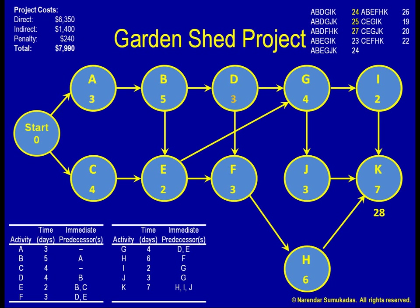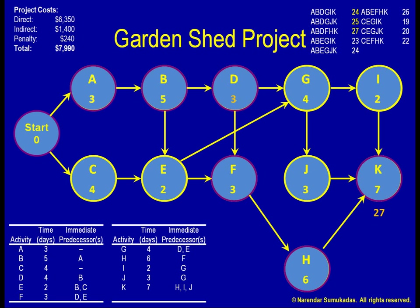Bringing D down to three days brings my project duration down to 27 days. The critical path is still A, B, D, F, H, K. My direct costs have gone up by $25 due to crashing D. Indirect costs have gone down by $50 since there is one day less of overhead. Penalty costs have gone down by $30 since there is one day less of storage rental. My total project cost for the 27-day schedule has gone down to $7,935.